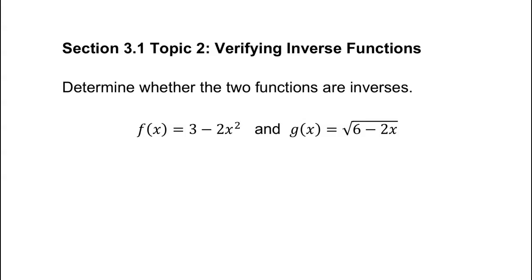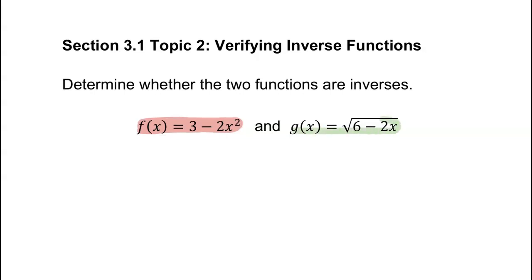I have f of x to be 3 minus 2x squared, a quadratic function, and g of x is square root of 6 minus 2x.